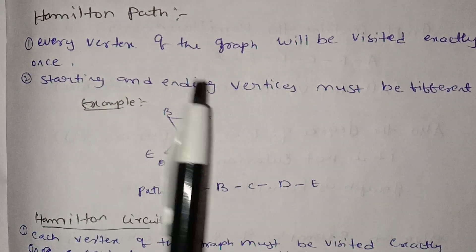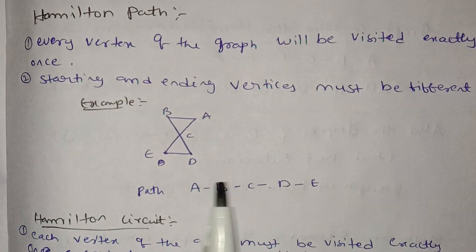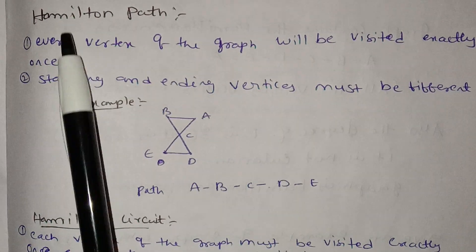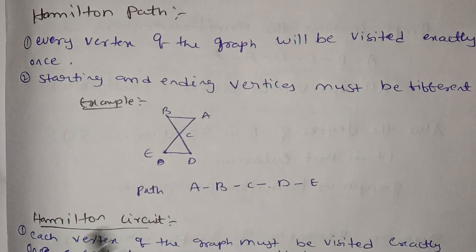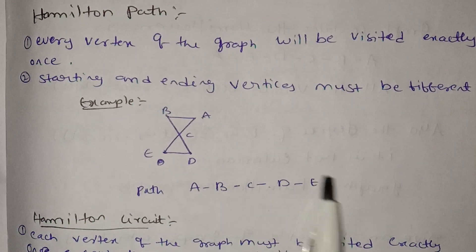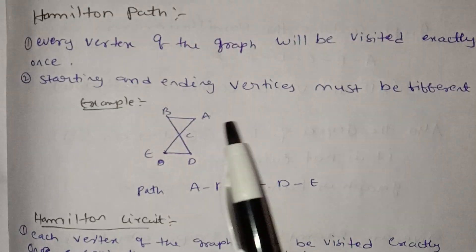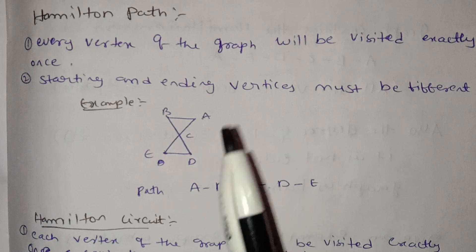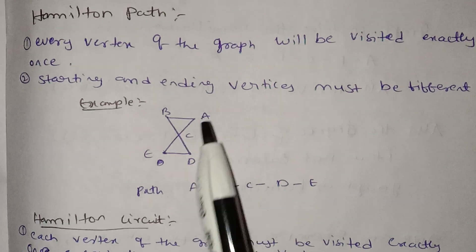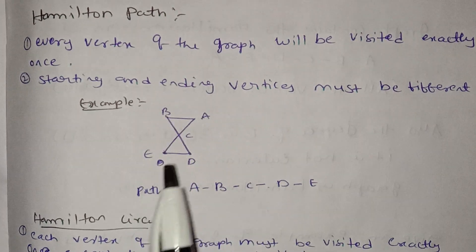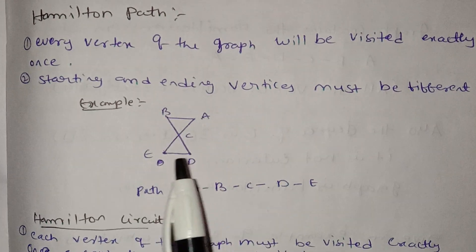In a Hamilton path, the starting and ending vertices must be different. Now the example vertices are A, B, C, D, E — we will trace the Hamilton path through these vertices.